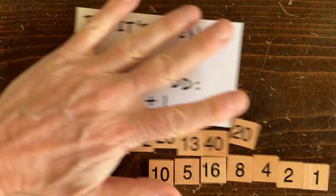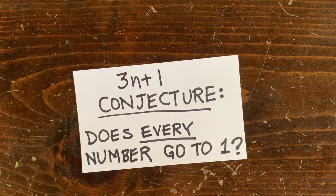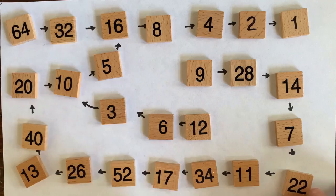The famous 3n plus 1 conjecture says every number goes to 1. Is that true? Is that false? No mathematician knows the answer. So it's a deep mystery. Let's see.